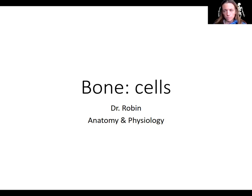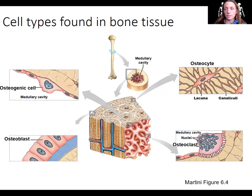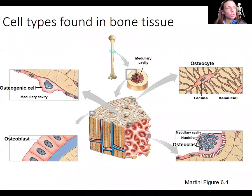There are two more terms we're going to introduce, one of which is a mature bone cell. Here are the cell types found in bone. First, osteogenic cells — the word genesis means making. So osteogenic cells are stem cells.